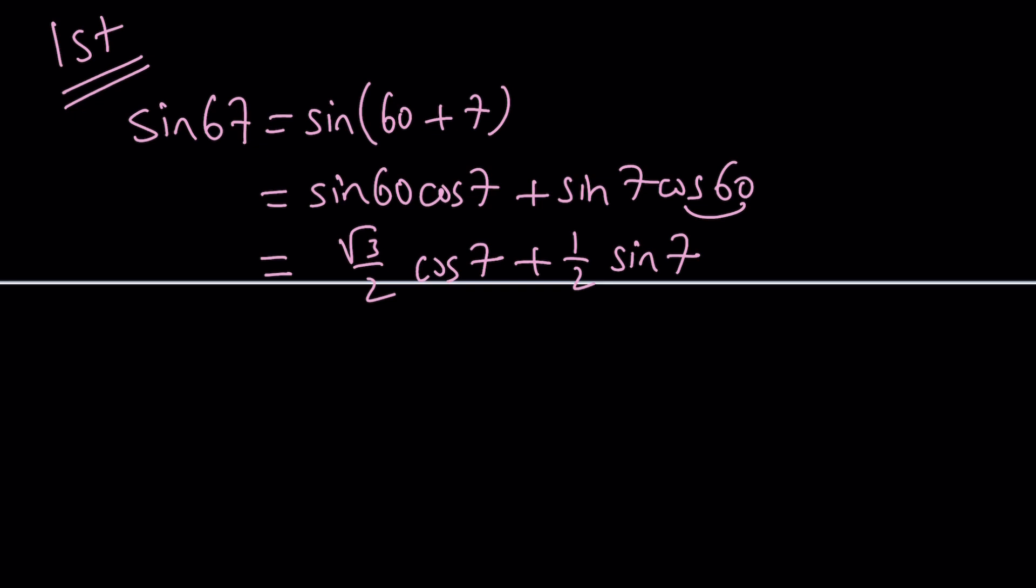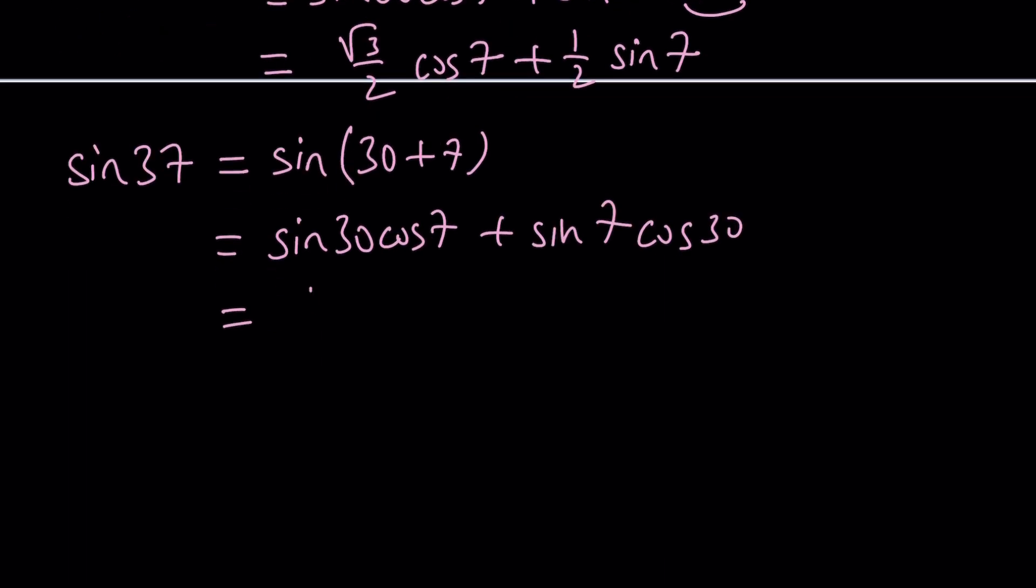Now we're going to do the same thing for 37. I'm not writing the degree symbol, but they're all in degrees. We're going to write it as sine 30 plus 7, use the same formula. Sine 30 cosine 7 plus sine 7 cosine 30. And now sine 30 is 1 half, so this can be written as 1 half cosine 7 plus root 3 over 2 sine 7.